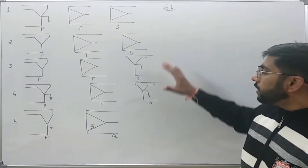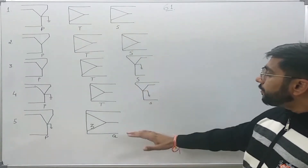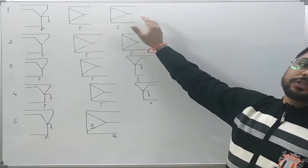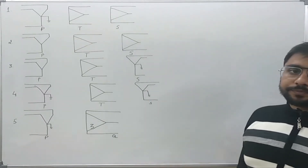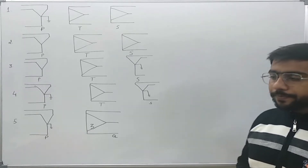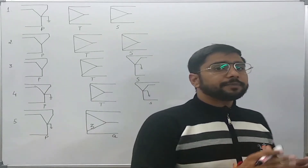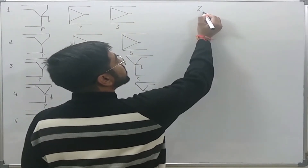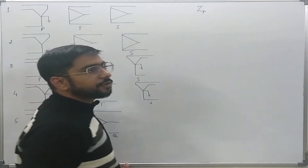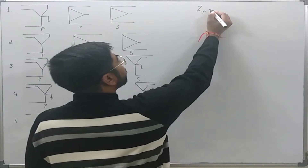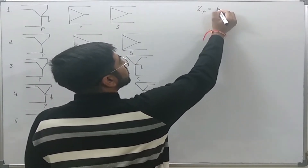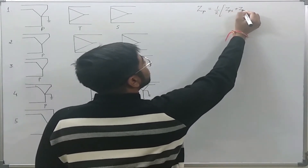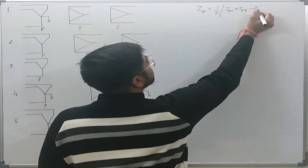In this board I have drawn these five networks, and the question is to draw the zero sequence network for each of them. As I already mentioned, in Lecture Number 61 I derived the various leakage impedances or series impedances for the various windings. Zp was equal to one-half times (Zps + Zpt − Zst).